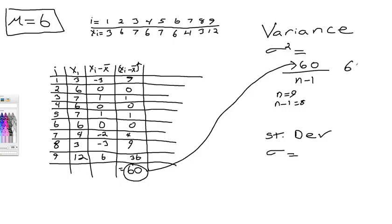So you need to figure out what 60 divided by 8 is. 60 divided by 8 is 7.5. So your variance is 7.5.